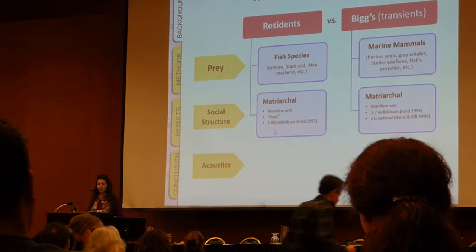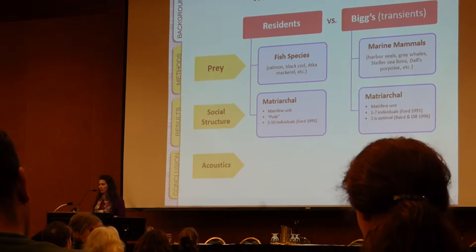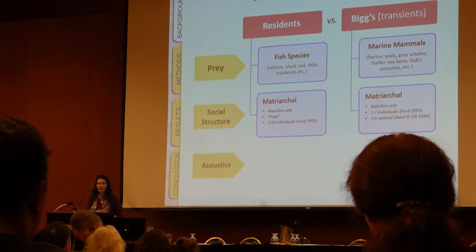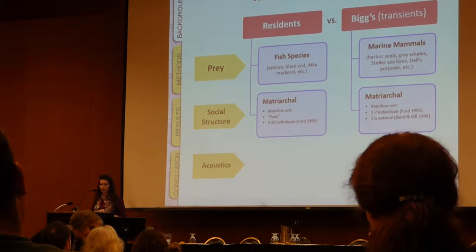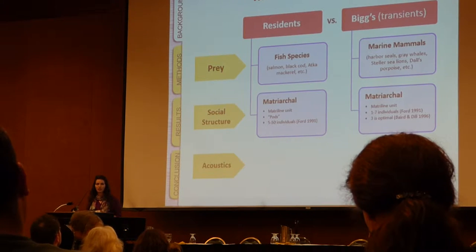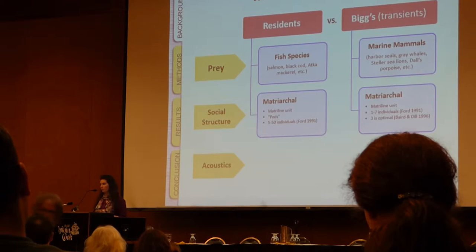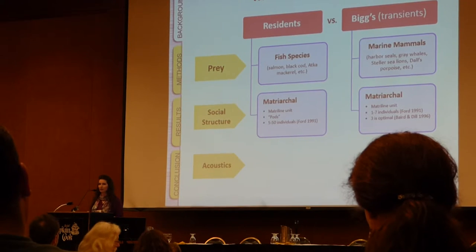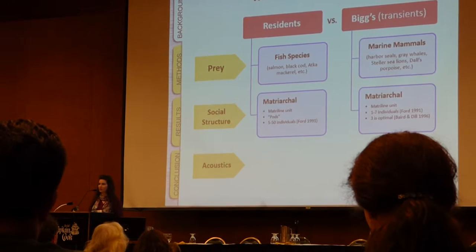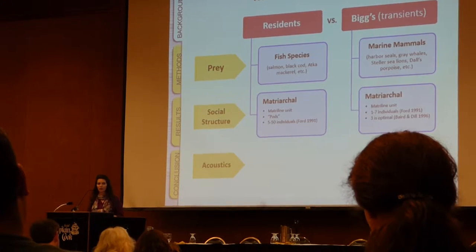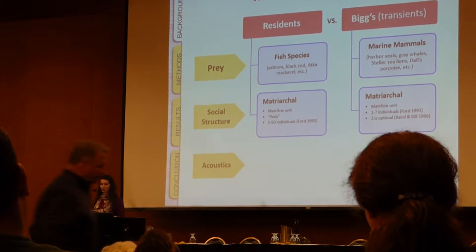Both ecotypes exist within a matriarchal society in which the matriline is the core social unit — a mother and her associated offspring of both genders. In the case of the resident ecotype, these matrilines group together and form pods, which can number somewhere between 5 and 50 individuals. In the case of Biggs killer whales, however, these matrilines are more often found by themselves. A Biggs killer whale group can number somewhere between 1 and 7 individuals, although research indicates that 3 is an optimal group size based on their foraging strategies.